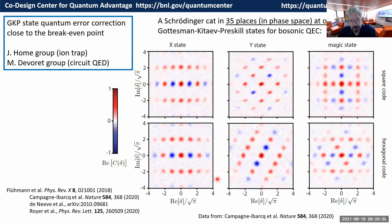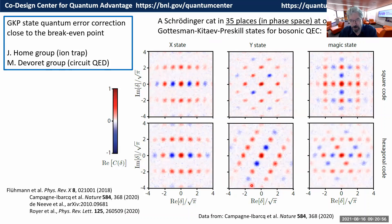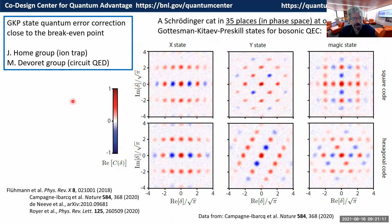Here's an even more remarkable non-classical state — Gottesman-Kitaev-Preskill states for quantum error correction. These states are like Schrödinger cats living at 35 different points in phase space at the same time. This ability to engineer exotic quantum states allows you to make quantum error-correcting codes where information is stored not in the qubit but in the oscillator. There's been a lot of technical progress on this recently, both in ion traps and in superconducting circuit QED.